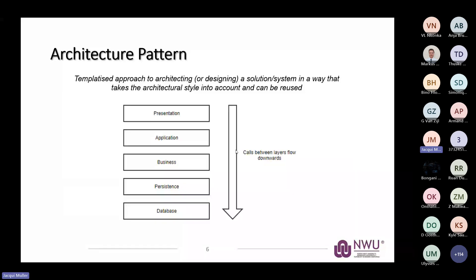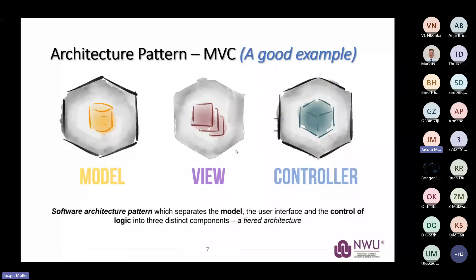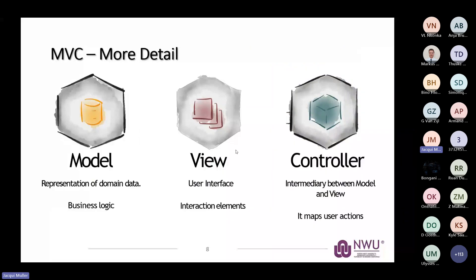An architectural pattern is a templatized approach for architecting solutions, focused on reusability. If we take our entire solution and break it into layers, we should be able to replace something in any layer without rebuilding the application. For example, if a project uses Excel as its data store and we later want to switch to SQL Server, we simply swap out the Excel spreadsheet for a SQL Server database and everything should still work — we just point it to a different source. MVC is a great example: it has three distinct components — model, view, and controller.